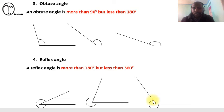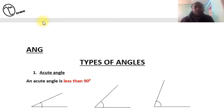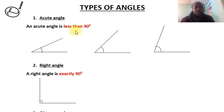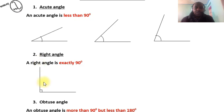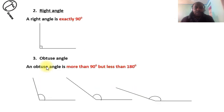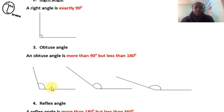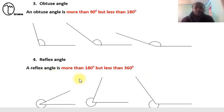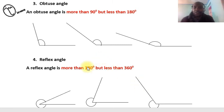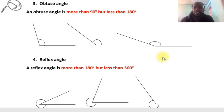In summary, there are four types of angles: an acute angle which is less than 90 degrees, a right angle which is exactly 90 degrees, an obtuse angle which is more than 90 but less than 180 degrees, and a reflex angle which is more than 180 but less than 360 degrees. In the next lesson we will be measuring angles using a protractor — don't miss it. See you in the next lesson!